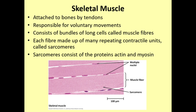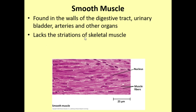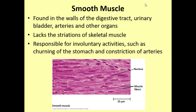Smooth muscle is found in the walls of the digestive tract — the intestines, stomach, and esophagus — as well as within the bladder, arteries, and other organs. It is involuntary, meaning we're not in control of it, and it doesn't have the same striations as skeletal muscle — it contracts in a different manner. Smooth muscle is responsible for involuntary activities like churning of the stomach and constriction of arteries, including the process of peristalsis that moves food down the esophagus.